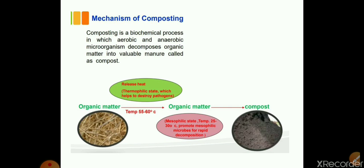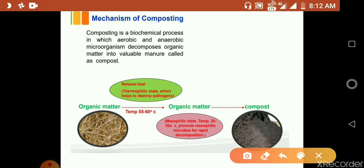Composting is a biochemical process in which aerobic and anaerobic microorganisms decompose organic matter into a valuable manure called compost. The organic matter, under temperatures of 55 to 60 degrees Celsius in the thermophilic state, and around 25 to 30 degrees Celsius promoting mesophilic microbes, undergoes rapid decomposition and is finally converted into compost.